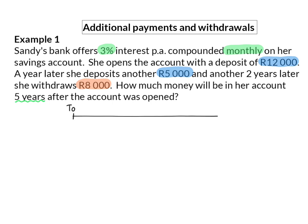A timeline helps if there are a lot of things happening in the same account. Here, three different amounts are deposited and withdrawn, so I'm going to make use of a timeline. The question ends with how much money will be in her account 5 years after the account was opened, and therefore my timeline will end at T5. Now I'm going to add everything that happens from T0 to T5.